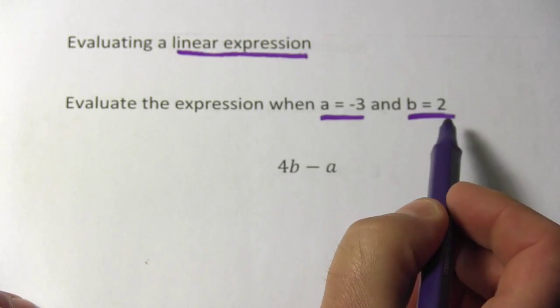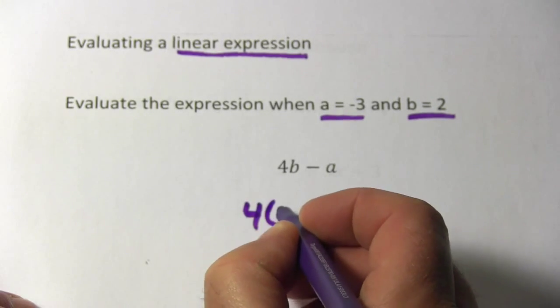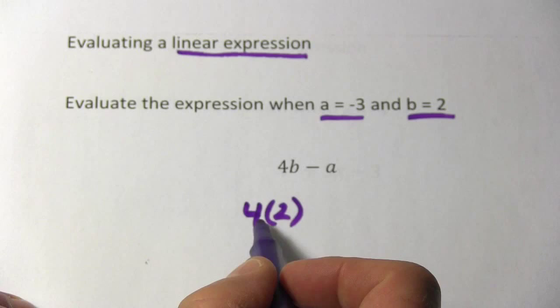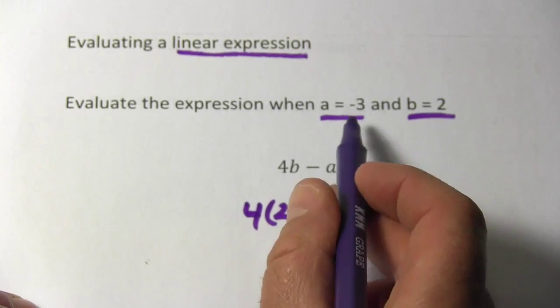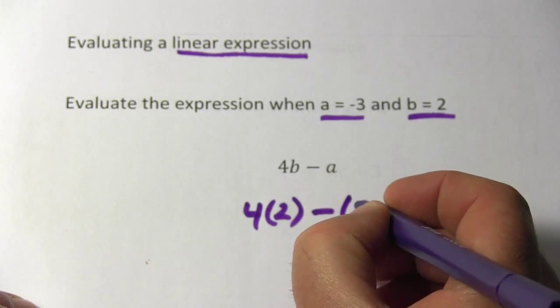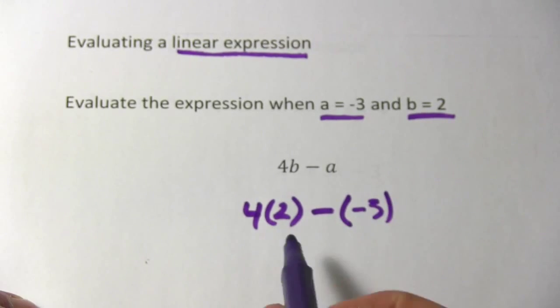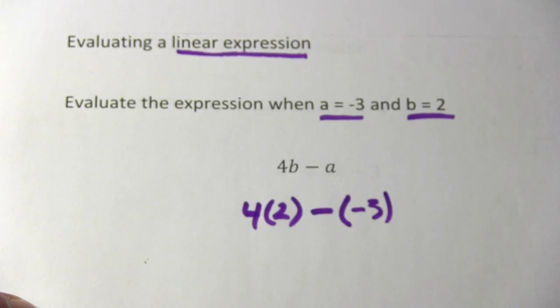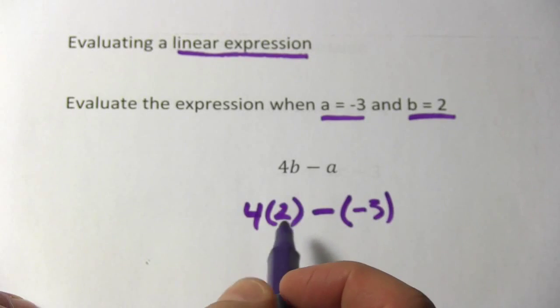I'm going to take (2) and put it in for b. So I would rewrite this as 4(2). And I have my minus sign, and then instead of a, it's (-3). If you keep the parentheses, you won't get confused about signs or how to multiply.